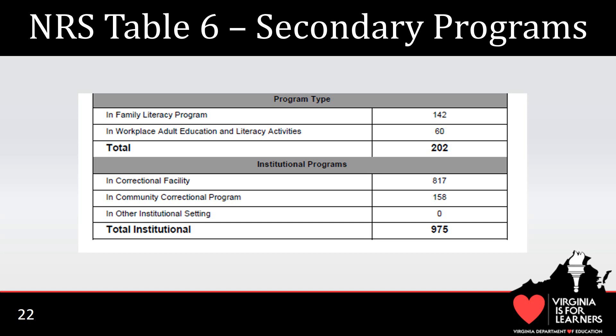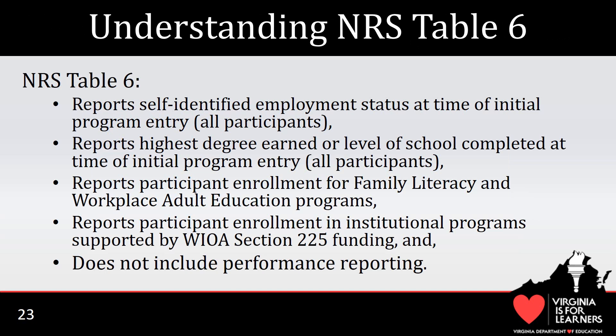Secondary program types include family literacy and workplace adult education programs, as well as the three program types covered by C&I funding. Specifically, these are programs in correctional facilities, community correctional programs, and other institutional settings. The data reported for both the employment status and educational level sections of NRS Table 6 are based on self-reported information. If a participant's information changes during the year, programs must not update this information in SSWS. For example, if a participant identifies as unemployed at the time of intake but later in the year gets a job, programs should not update the participant's employment status, nor should the employment status initially recorded on the ASPD be changed to reflect the updated status.